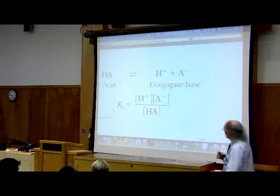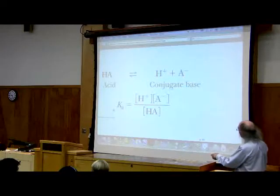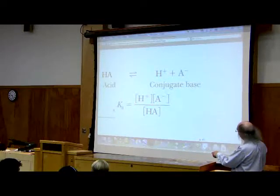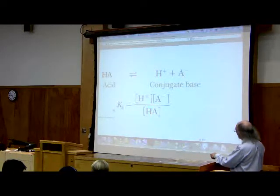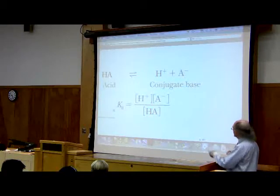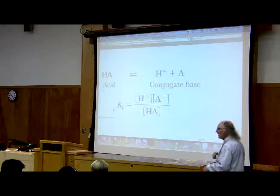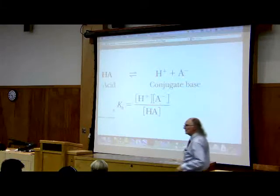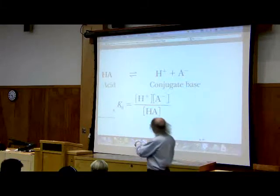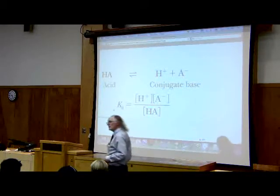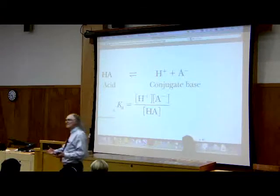A weak acid — I said I had one in 50 million. I've got one up here in the numerator, and one over here, and I've got 49,999,999 down in the denominator. This is a small number. This is a weak acid.